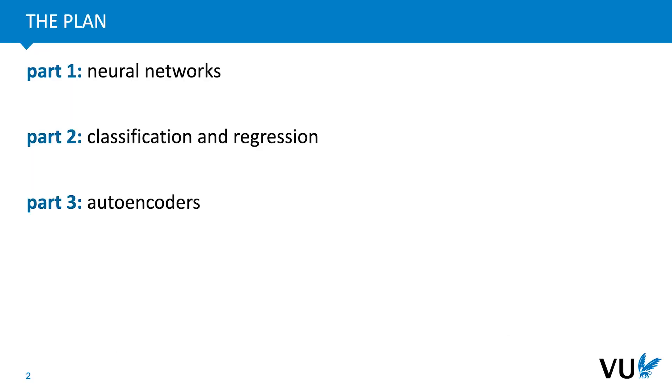We will begin with a basic outline of what neural networks are. Then we will show how to apply them to basic machine learning tasks like classification and regression. And finally, we will show you something a little bit different, how you can use neural networks to build specialized architectures. And we will do this by showing you one example of these kinds of architectures, namely the autoencoder.